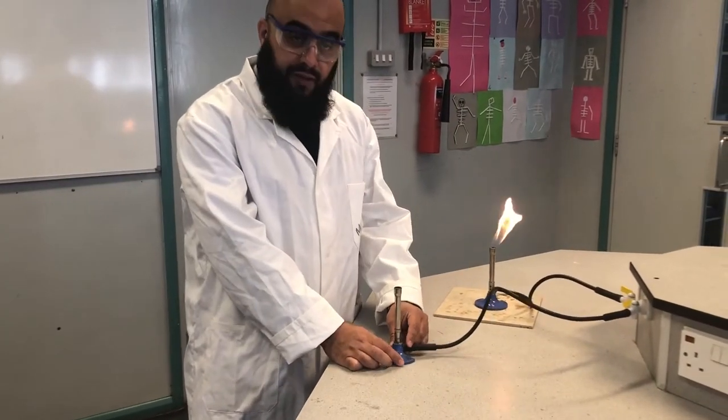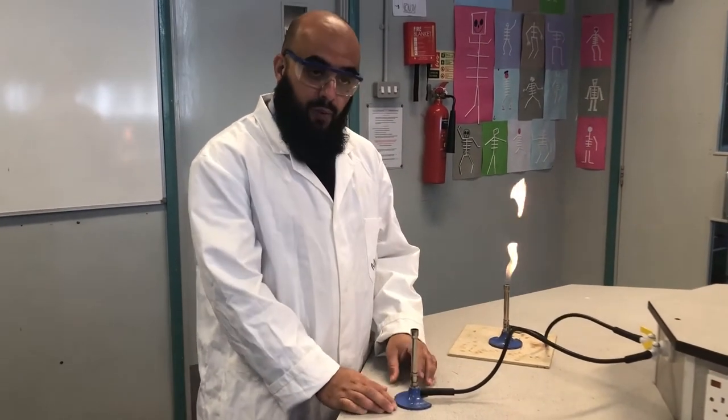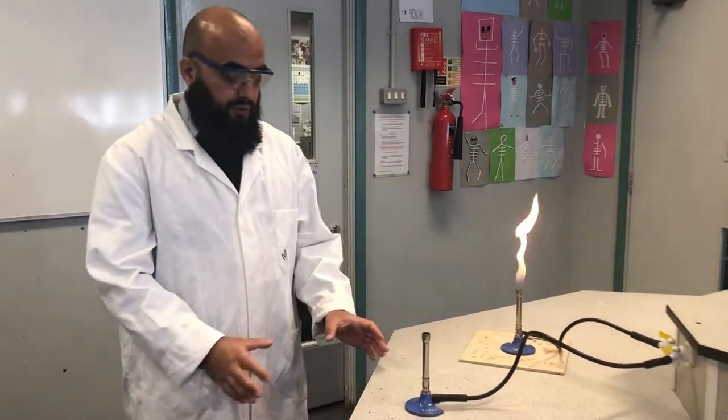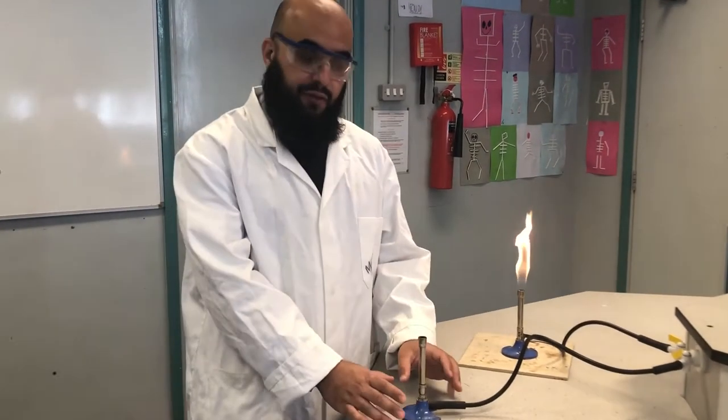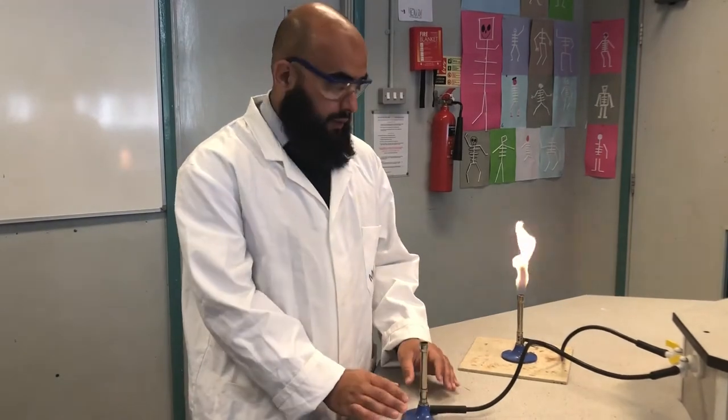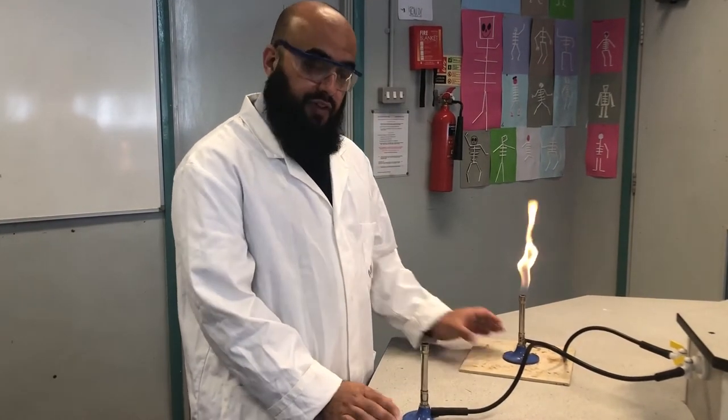Hello, welcome Year 7 to Science at Harrow High School. We're going to be working with the Bunsen burner today. I'm just going to be demonstrating a little bit about how this crucial piece of equipment works and also how to use it safely.